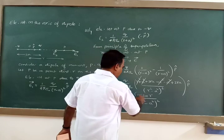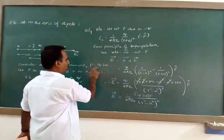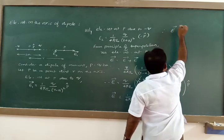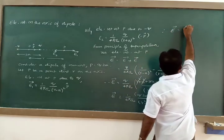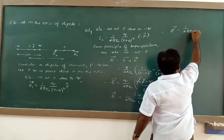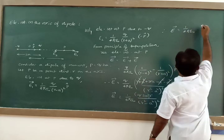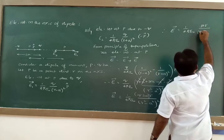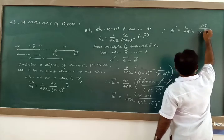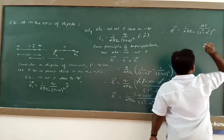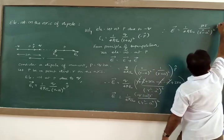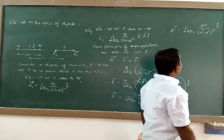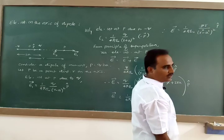This Q times 2a is nothing but the magnitude of the dipole moment. Therefore, vector E = (1/4πε) × P × r / (r² − a²)², in the direction of P-cap. This is the expression for electric intensity at a point on the axis of the dipole.